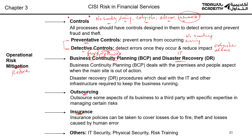This is how we mitigate and reduce operational risk: through the use of controls, business continuity, insurance, and outsourcing. And of course, you can also have physical security — for example, ID scanning — and IT security using passwords, and so forth.